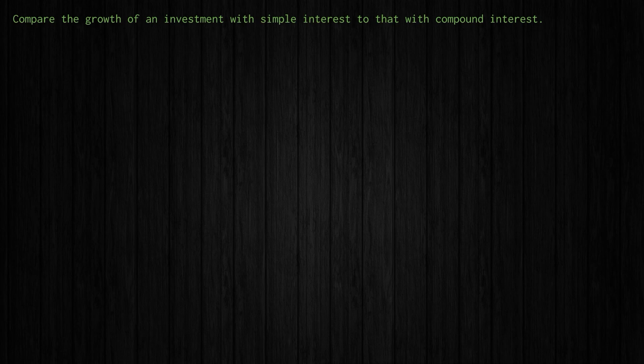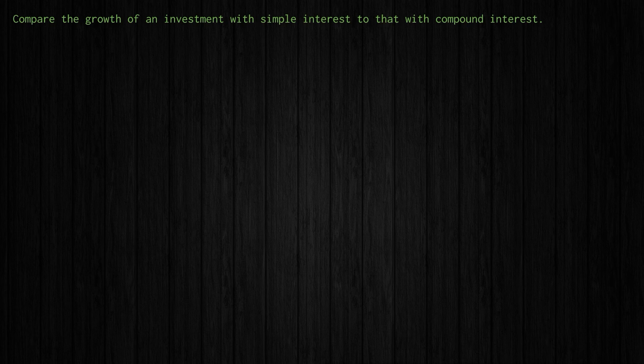Here we are with the final problem of the Python in Five Problems video series. We're going to compare the growth of an investment with simple interest to that with compound interest. We're going to take a bunch of concepts from the previous videos and put them together into one problem to solve something related to the curriculum but also useful for real life.